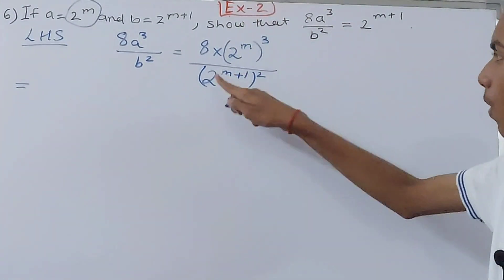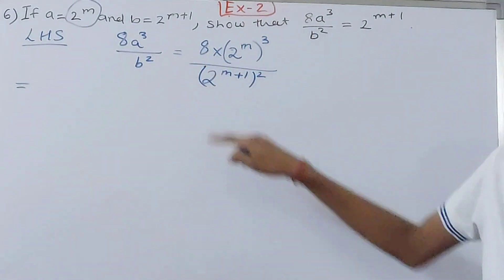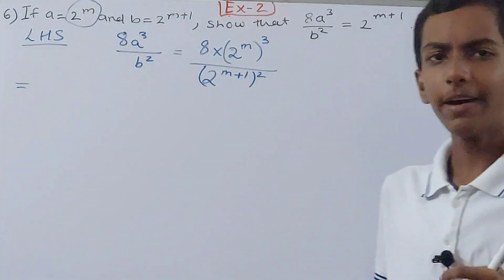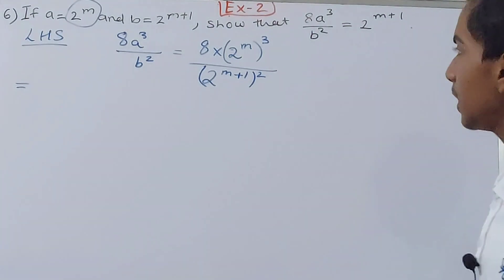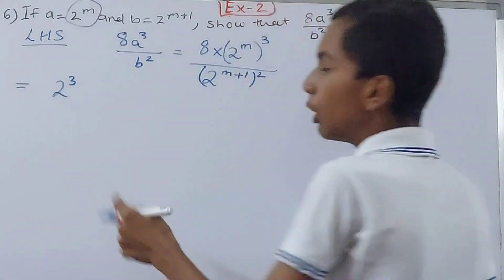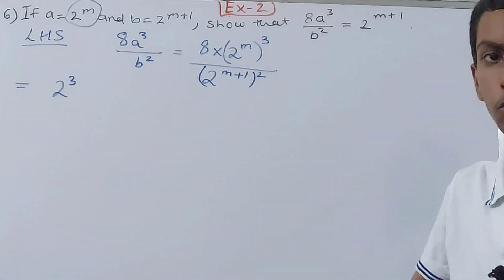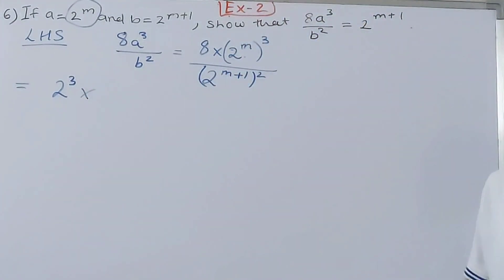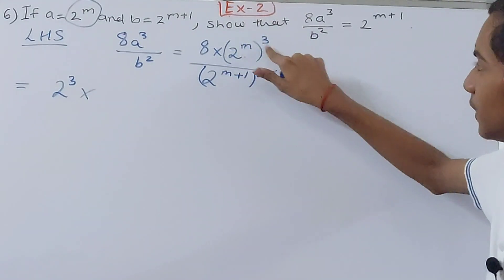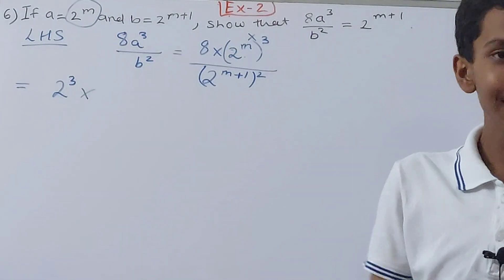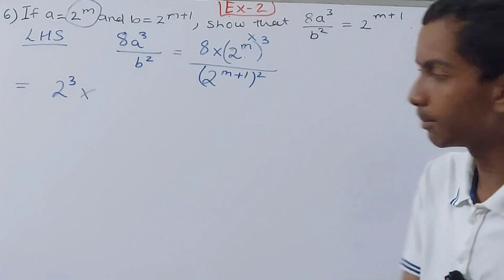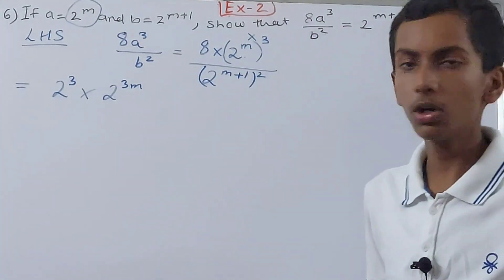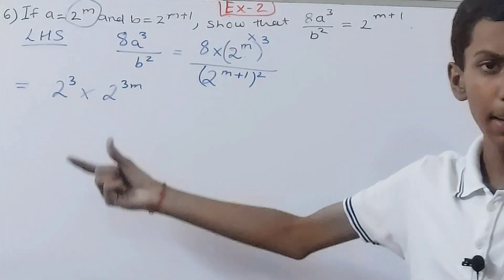Right now I have three different bases: 8, 2, and 2. If I can make them all the same, I can solve this. I can write 8 as 2 to the power 3, since 2 × 2 × 2 = 8. Then for 2 to the power m, whole raised to the power 3, I multiply the exponents: m × 3 = 3m, giving 2 to the power 3m. So the numerator becomes 2³ × 2^(3m).